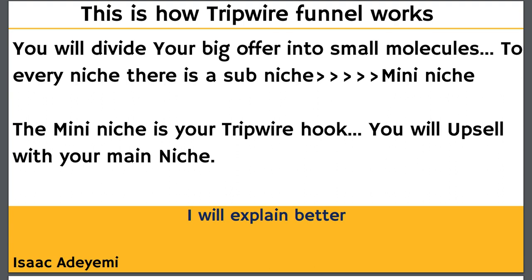When you come in applying the tripwire funnel strategy, it's much easier because you've already gained the trust of the person. As a website designer, your main niche is website design, your sub-niche is landing pages, and your mini-niche is form page design. You create an offer on form page design — something very small — and when someone purchases it, you can upsell them to your landing page offer or your main website design offer, because you've already gained their trust.